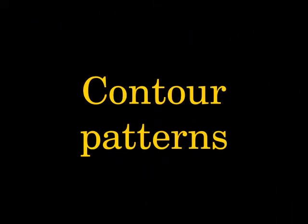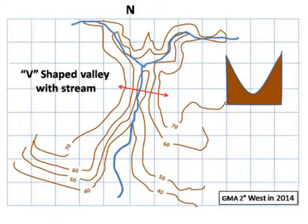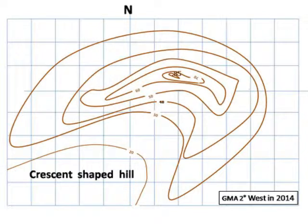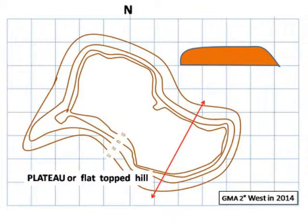There are a number of fairly typical contour patterns: starting with the V-shaped valley, which was formed by rivers; the U-shaped valley, which was formed by glaciers; and a hill.